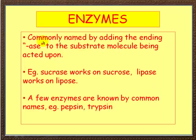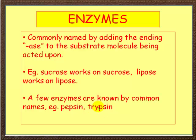Enzymes are commonly named by adding the ending -ase to the substrate molecule being acted upon. For example, sucrase works on sucrose, and lipase works on lipids. So all we've done is change the ending: -ase is the enzyme, and the substrate is, for example, sucrose or lipids. Now we've got a few enzymes that don't follow this rule but have their own common names — for example, pepsin and trypsin. So they don't follow the -ase rule, but most do.